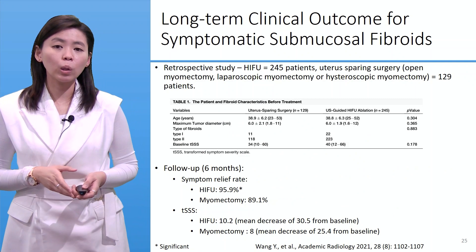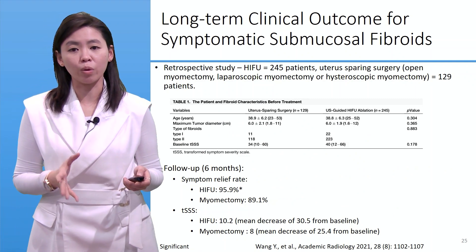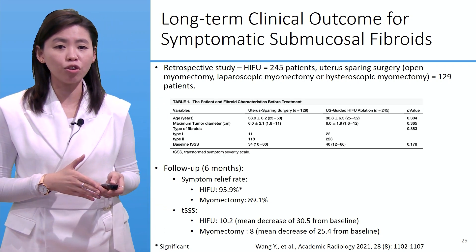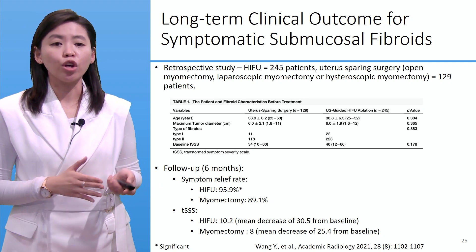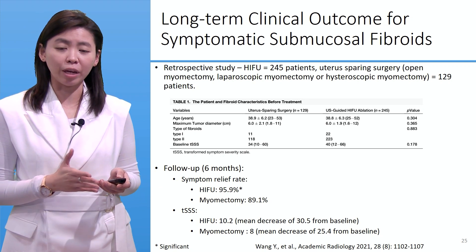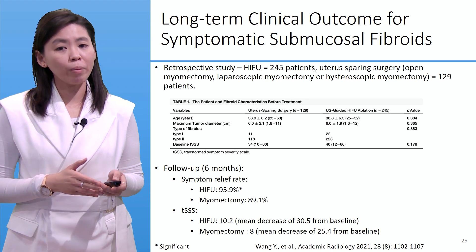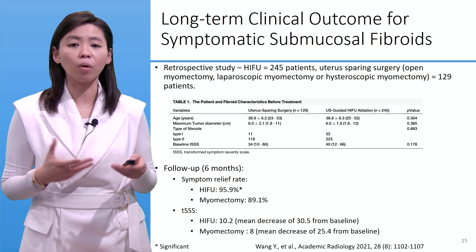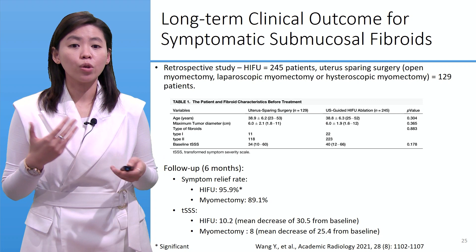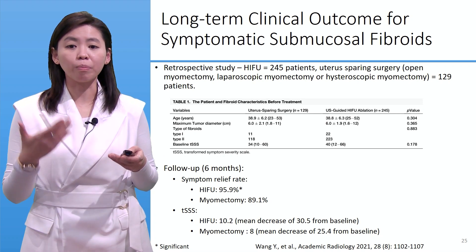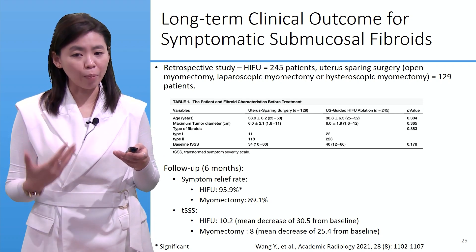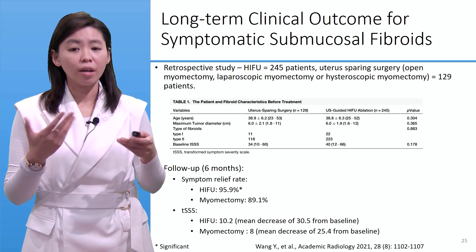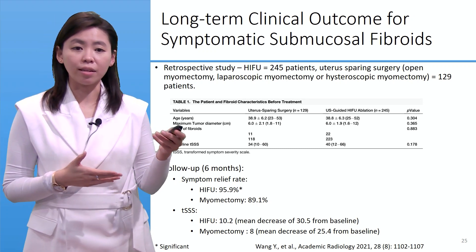Next, let's look at long-term clinical outcomes for symptomatic submucosal fibroids. This retrospective study compared 245 HIFU patients to 129 uterus-bearing surgery patients undergoing open myomectomy, laparoscopic myomectomy, and hysteroscopic myomectomy. The table comparing patient and fibroid characteristics shows that age, maximum tumor diameter, fibroid type (type 1 or type 2), and baseline transform symptom severity score were the same between the surgery group and the ablation group.